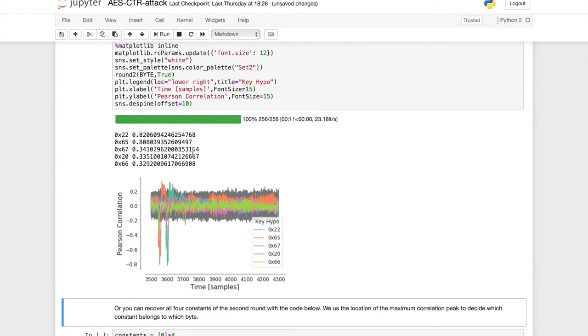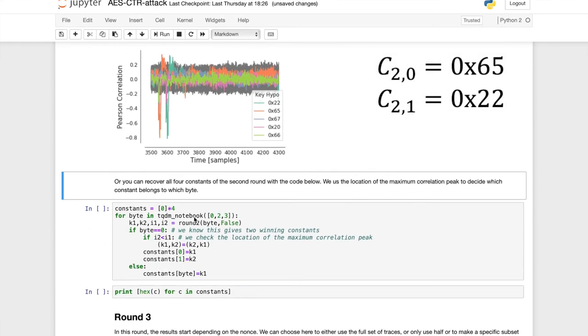We get the result after only 10 seconds. And so since we did two bytes at the same time, we have also two guesses that very convincingly win from the others. But there are different time samples in the trace. So the first one, the orange one, is the constant that we wanted to recover for the first byte of the column. And the second one is for the second byte.